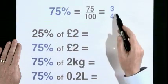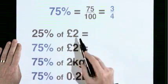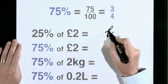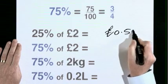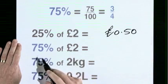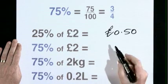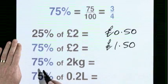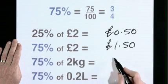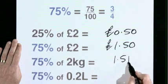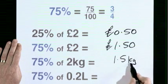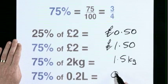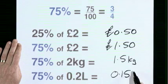75% is three quarters. 25% of 2 pounds is 50 pence, so 75% of 2 pounds is 1 pound 50. 75% of 2 kilograms is 1.5 kilograms. 75% of 0.2 litres is 0.15 litres.